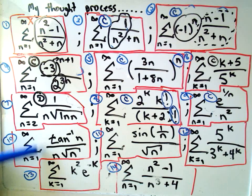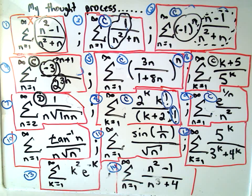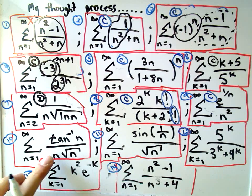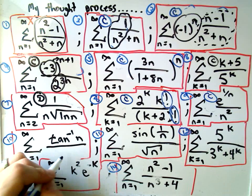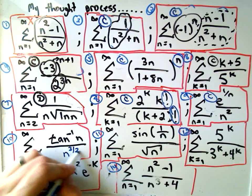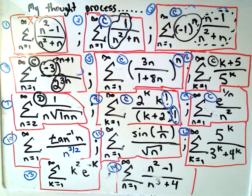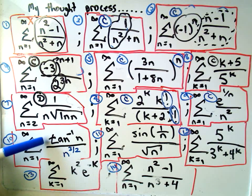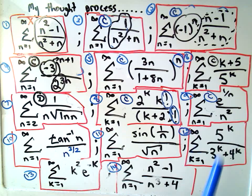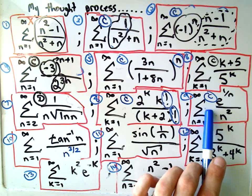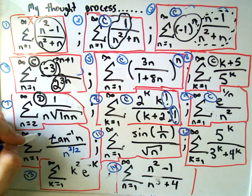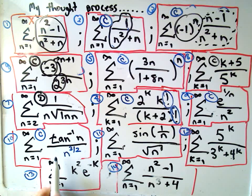Number 10, arctangent divided by n times the square root of n. Well, if you simplify the denominator, that's going to be n to the 3 halves. That's a convergent p series. Well, if you remember, arctangent is bounded. It's bounded above by pi over 2. So I think you could use the direct comparison test on this one, much in the same way that you could use the direct comparison test on number 9. And you could show that number 10 also converges.